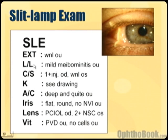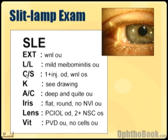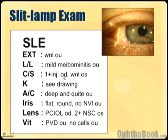LNL just means lids and lacrimation. This patient has mild meibominitis or blepharitis OU — I'll go into that in another video. CNS just means conjunctiva and sclera, that's the white part of the eye. You can have injection, you can have subconj blood, or it can be white and quiet. This patient has one plus injection in the right eye and normal in the left eye.